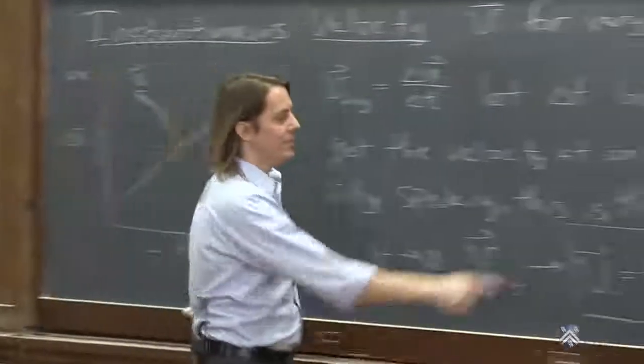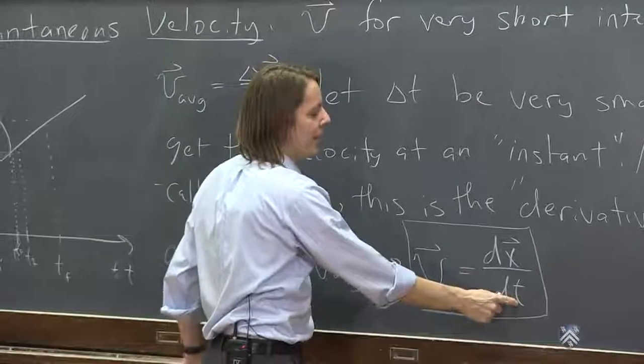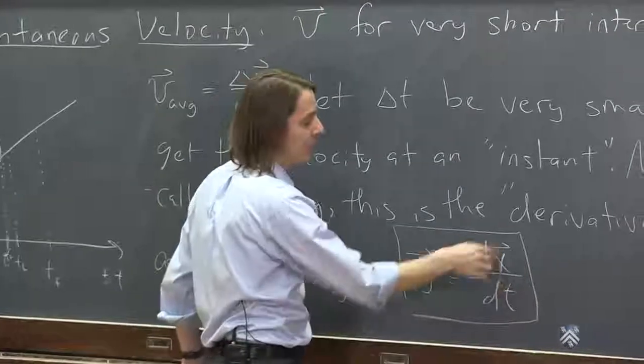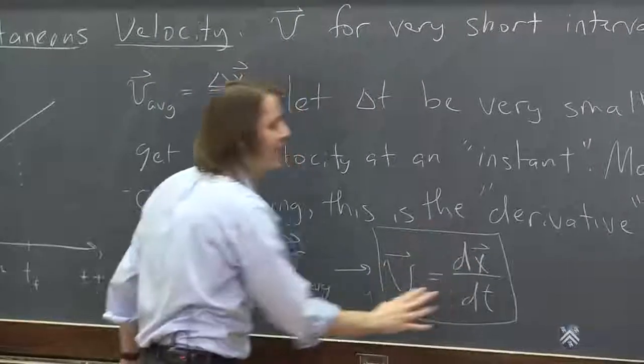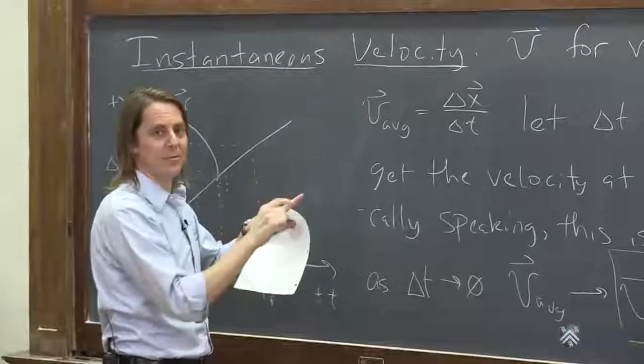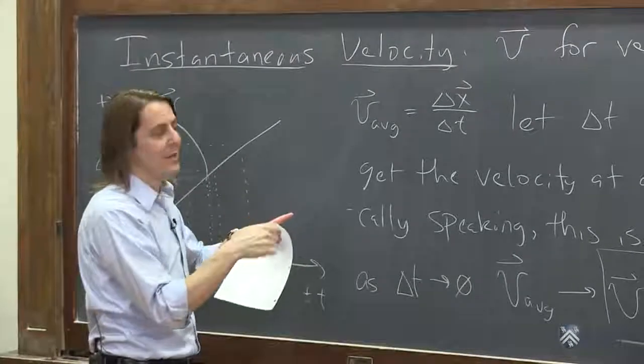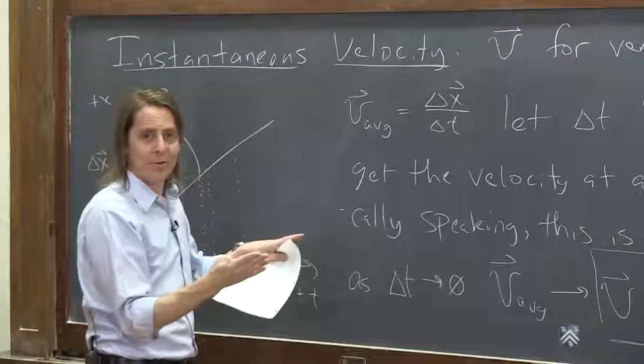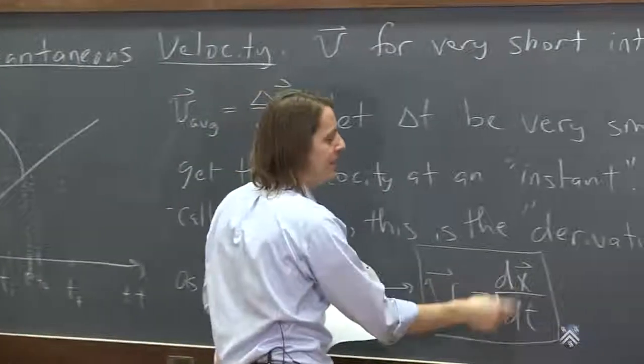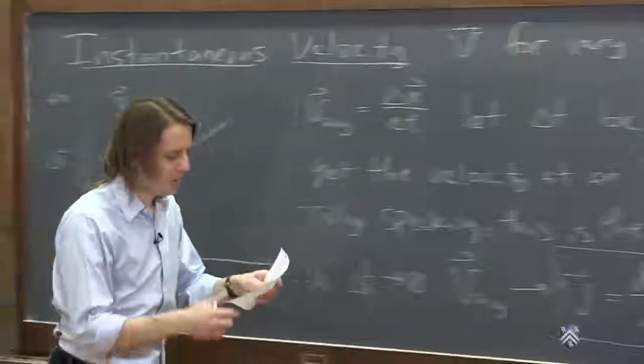It's the derivative of the position as a function of time. And it's a vector because the position, remember, is also a vector. It's the displacement from the origin. So this is our formula. If you know calculus and you're given the position as a function of time, you know what to do. Take a derivative. If you don't know calculus, don't worry about it. We'll teach you a little bit about how to do it. But basically, there's a mathematical procedure to find DX/DT when you know X as a function of time.